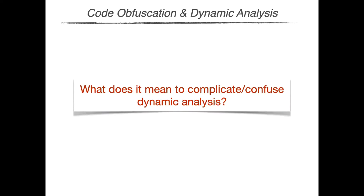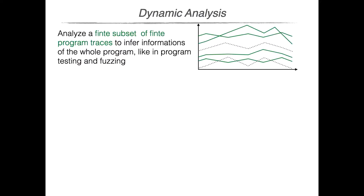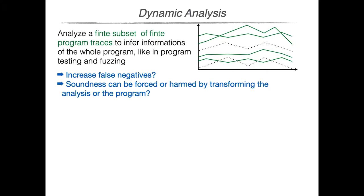The initial goal of our work was to define a program transformation able to make dynamic analysis more difficult. To this end, the first thing we need to understand is what it means to complicate dynamic analysis. By looking at existing dynamic analysis, they can be divided into two main classes: those techniques that collect a finite subset of finite execution traces and then analyze them to derive information or properties that hold on the whole program — like in program testing, fuzzing, dynamic reconstruction of the control-flow graph, etc. For this type of dynamic analysis, which seems to be the dual of static analysis, we wondered if complicating the analysis corresponds to adding false negatives.